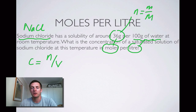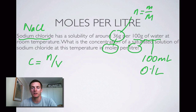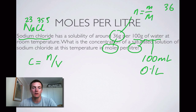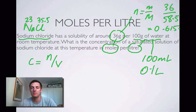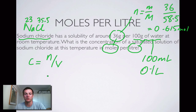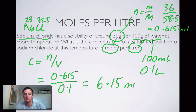100 grams of water — since 1 milliliter of water weighs 1 gram, this is 100 milliliters, which is 0.1 liters. The number of moles equals the mass (36 grams) divided by the molar mass (23 + 35.5 = 58.5), which gives 0.615 moles. So the concentration is 0.615 moles divided by 0.1 liters, which equals 6.15 moles per liter.